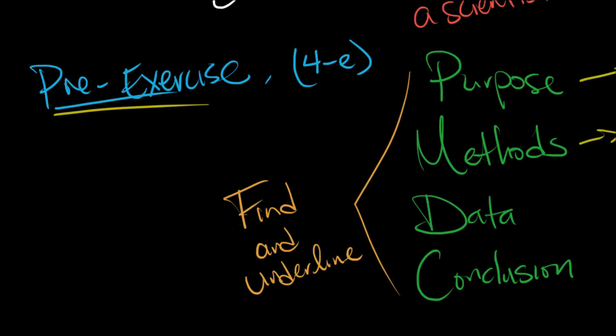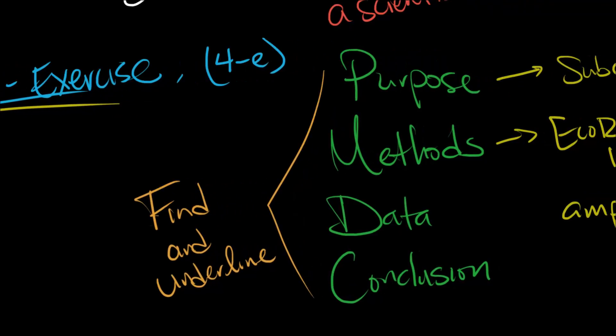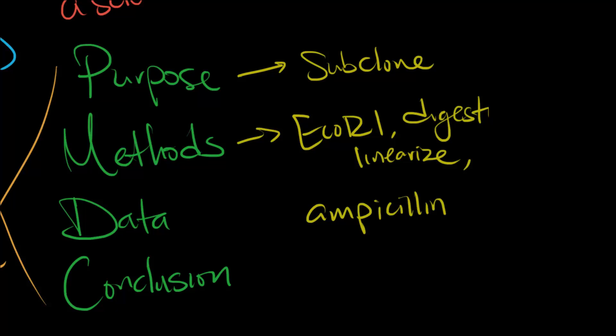By now you should be able to tell me about the purpose and methods. The purpose is in the first sentence where it says subclone. We're trying to clone a gene. For the purposes of this video, let's say we're trying to clone and express the gene that produces insulin. People with type 1 diabetes need insulin to help their cells take up glucose.